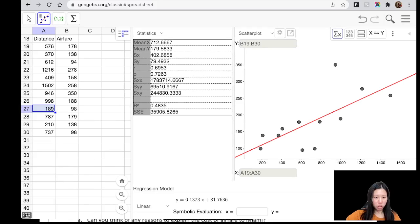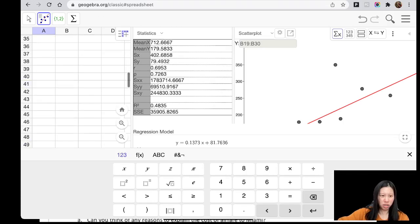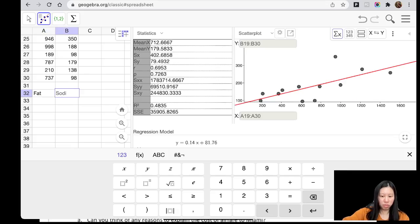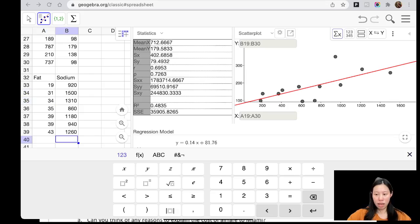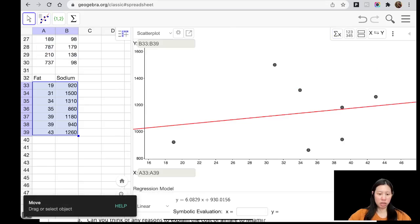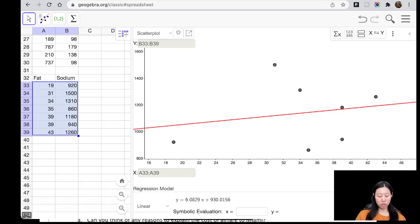Again, we put in the data - fat and then sodium. I'm going to pause the video and do it by myself. Okay, now I've put all the data in here. Again, you highlight the data that you want to generate a scatter plot, and then you click on two-variable regression. Here we are, so here is our scatter plot.